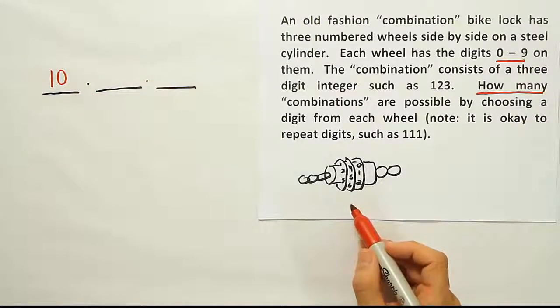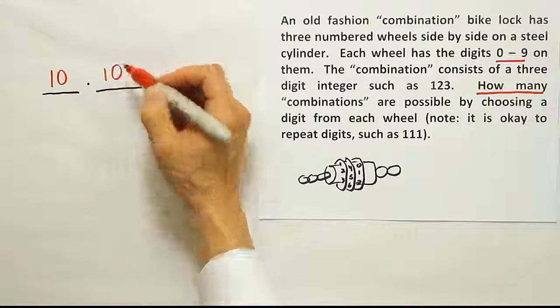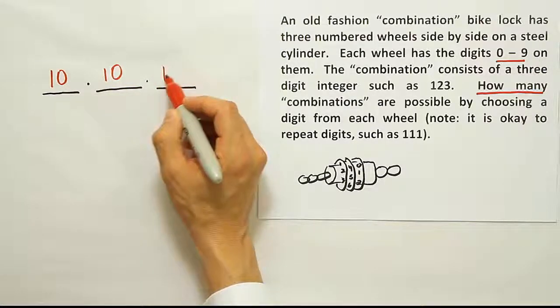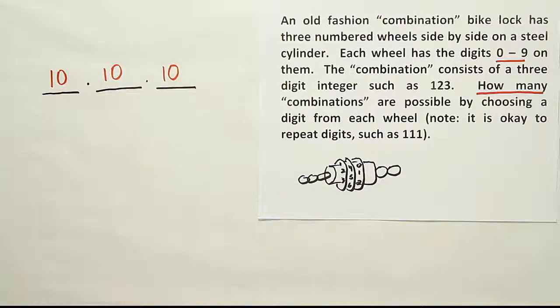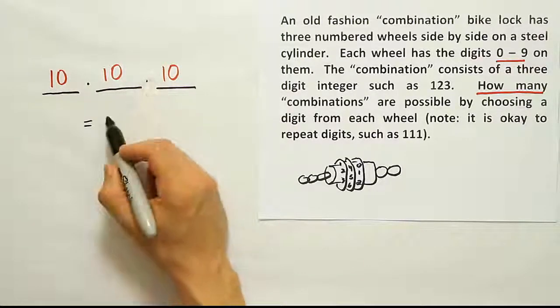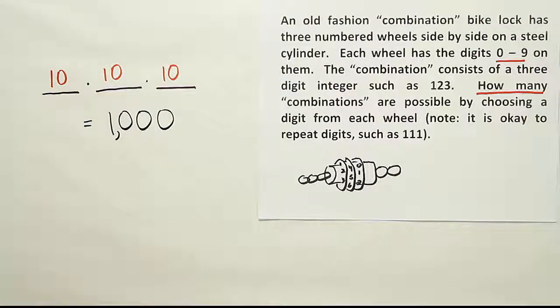When you go to the second wheel, again, you can reuse the digit you used before. You're allowed to, so there's still 10 different values available. And on the third and final wheel, again, you have 10 ways to fulfill that choice. You can have 10 different options to fill it. And so when you're done, you just multiply these out and your answer will become 10 times 10 is 100 times 10, of course, is 1000. There are a thousand unique combinations that you could use on a lock of this type.